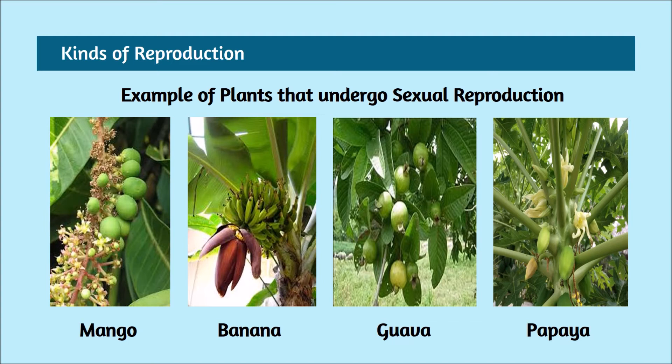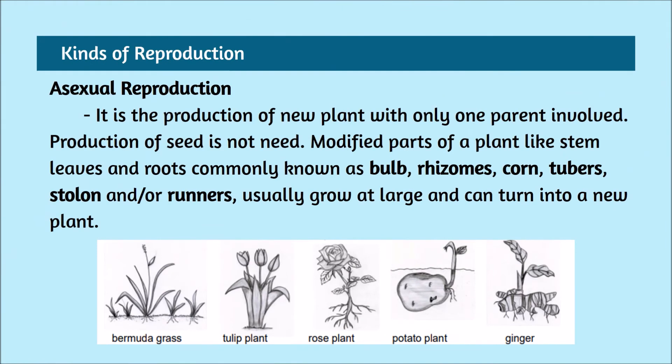You can see most of its fruits came from its flowers. It only explains that these plants undergo sexual reproduction. Asexual reproduction is the production of new plants with only one parent involved. Production of seed is not needed.